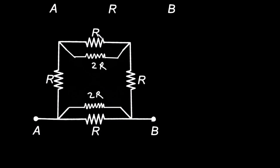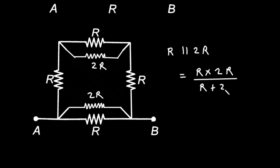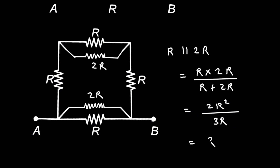Now here we can clearly see this R and this 2R, they are connected in parallel. So R parallel with 2R gives R times 2R divided by R plus 2R, which equals 2R² divided by 3R. This R cancels, so it will be 2/3 R.